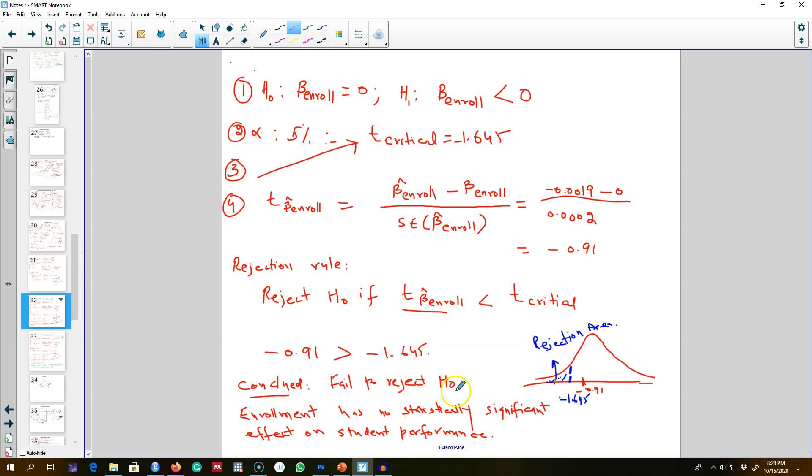So we conclude that we fail to reject H0, this hypothesis, and we are going to conclude that enrollment has no statistically significant effect on student performance. That's how you test a hypothesis on the lower end of a normal curve.